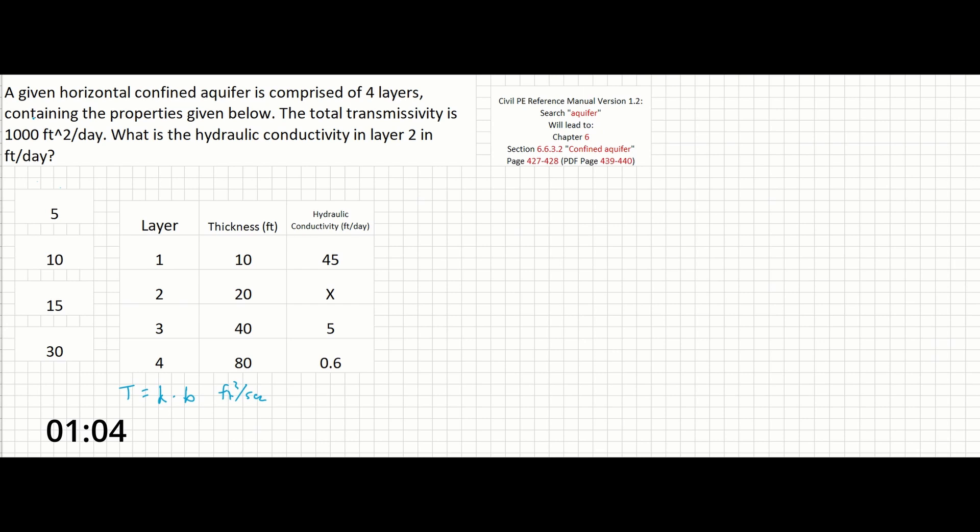On the next page of the reference manual there's a section titled multiple aquifer layers. Here and elsewhere on these two pages we can find that k is the hydraulic conductivity per unit width and that b is the individual layer thickness.